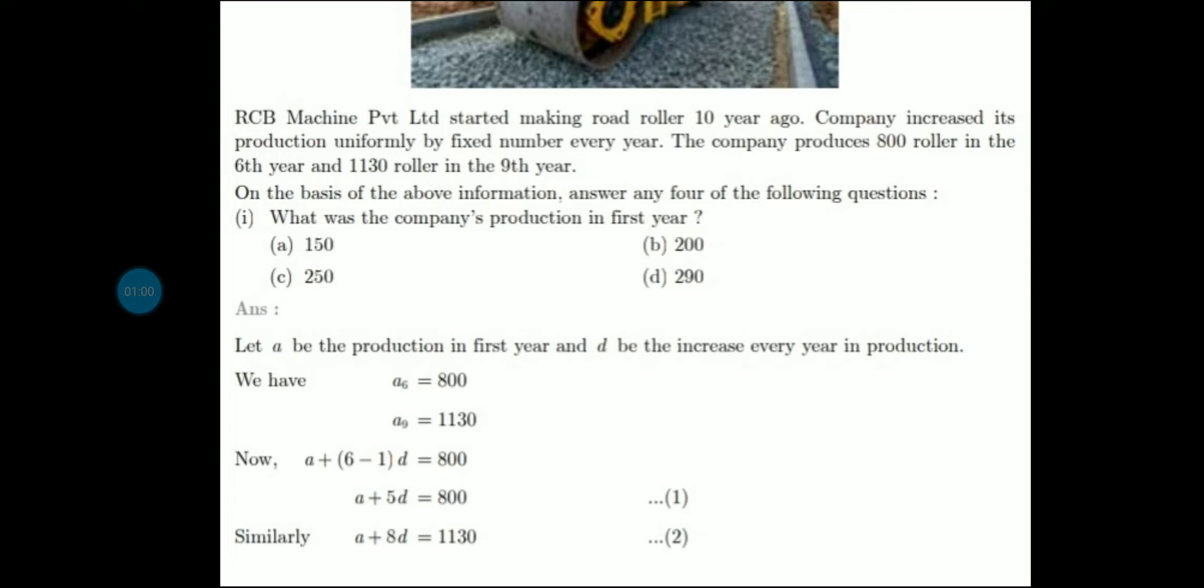What was the company's production in the first year? You will let A be the production of the first year. You will let A be the first term and D be the common difference. D is the increase every year in the production.